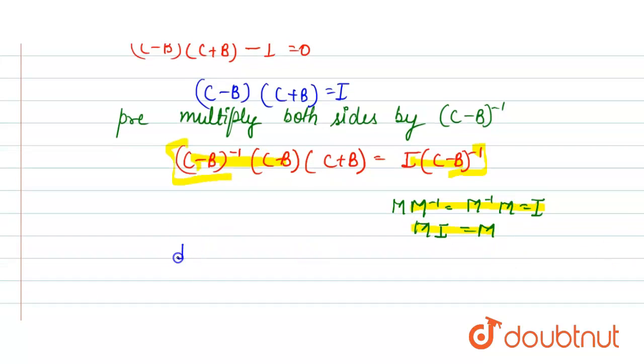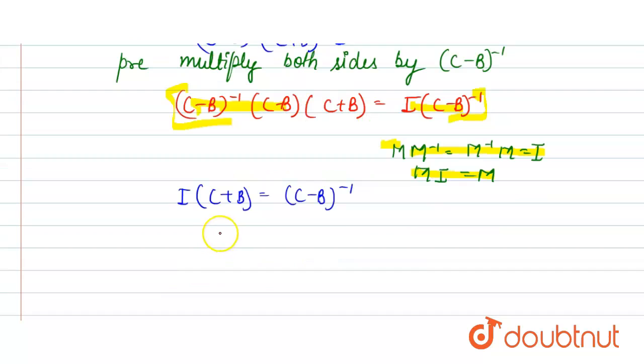So I into C plus B is equal to C minus B inverse. So from here we get C plus B is equal to C minus B inverse, and we can write it as C minus B inverse is equal to C plus B.